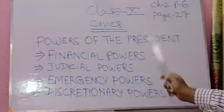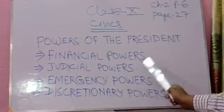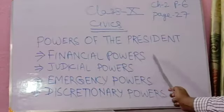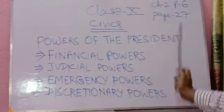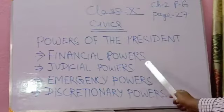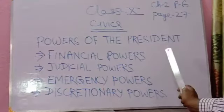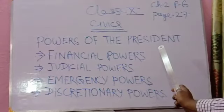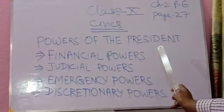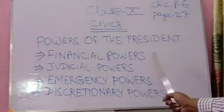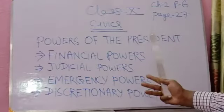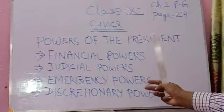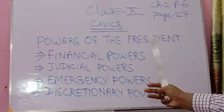This was the judicial power of the president. So we have seen the financial powers and the judicial powers. Next is the emergency power of the president. Under emergency powers, we will be discussing three types: national emergency, constitutional emergency, and financial emergency.